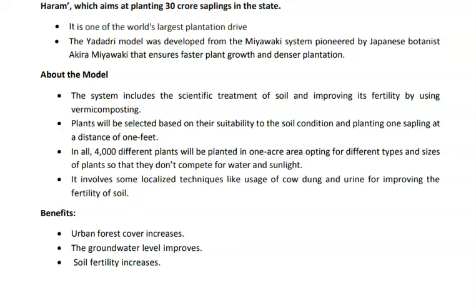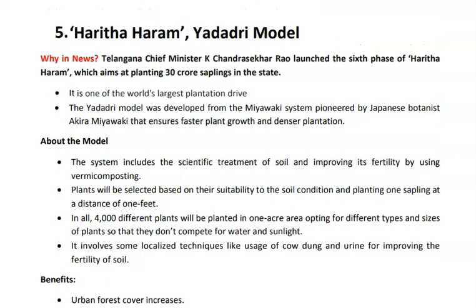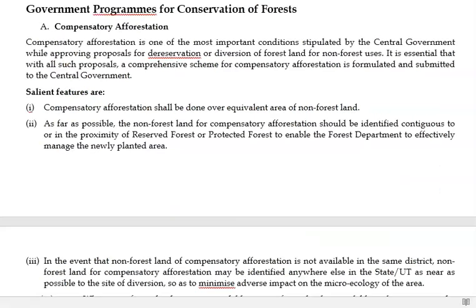The benefits of this model include increased forest cover, improvement of groundwater levels through scientific irrigation methods for better water utilization, and increased soil fertility through natural methods rather than chemical pesticides and insecticides. This serves as a state model for increasing forest cover, alongside other government schemes for forest conservation.